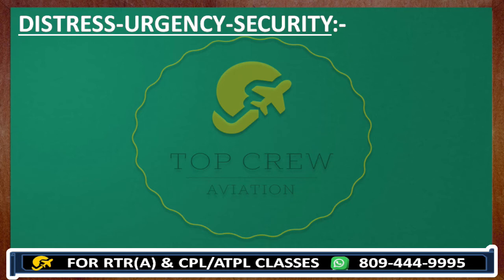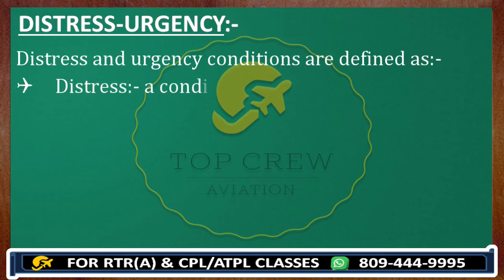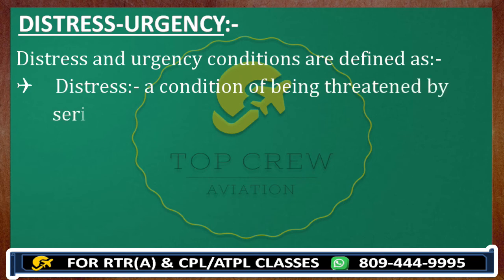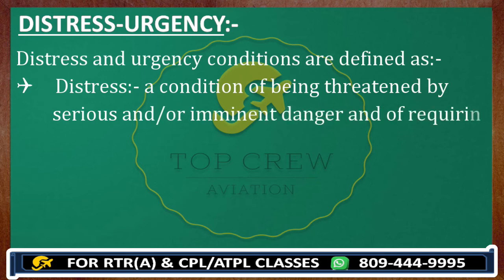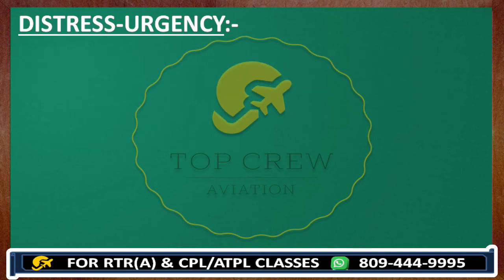There are two types of emergencies: distress and urgency. The formal definition of distress is: a condition of being threatened by serious and/or imminent danger and requiring immediate assistance. You should know this definition as it is, as it will appear in the Air Regulations section of your DGCA pilot examination.